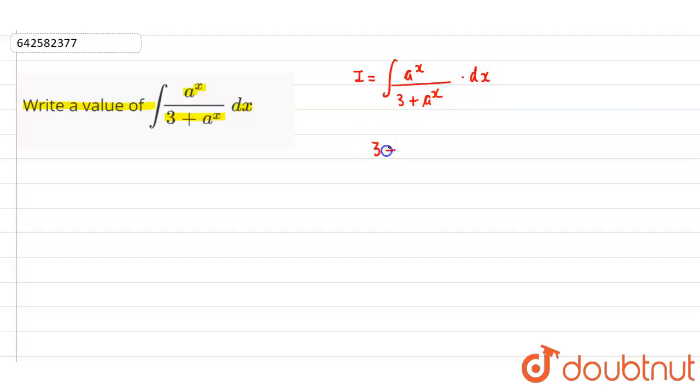So we can assume here 3 plus a to the power x as t. So what is the differentiation of 3? It is constant, so its differentiation is 0. What is the differentiation of a to the power x? It is a to the power x into natural log of a into dx equals to dt.